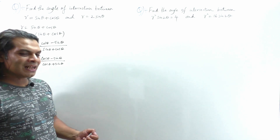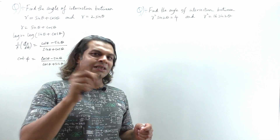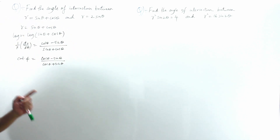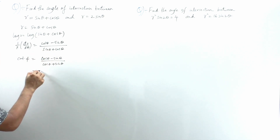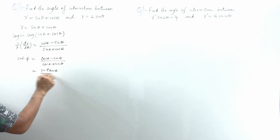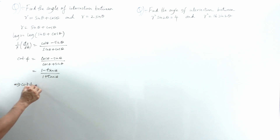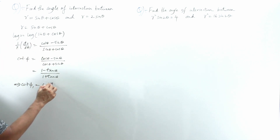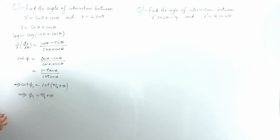Please go back and refer to the formulas given for polar curves. Check the first video description, find the PDF link, download it, and memorize the formulas — without them you cannot solve any polar curves problem. So cot φ = (cosθ − sinθ)/(cosθ + sinθ) = (1 − tanθ)/(1 + tanθ), which equals cot(π/4 + θ). That implies the first angle φ₁ = π/4 + θ.